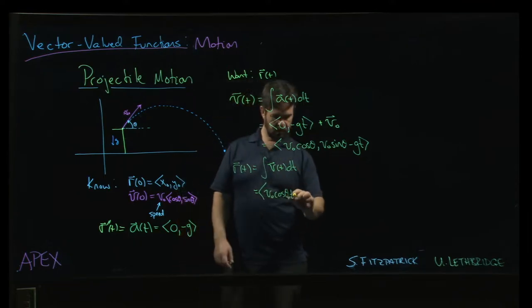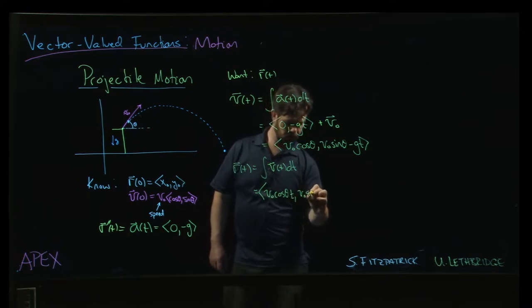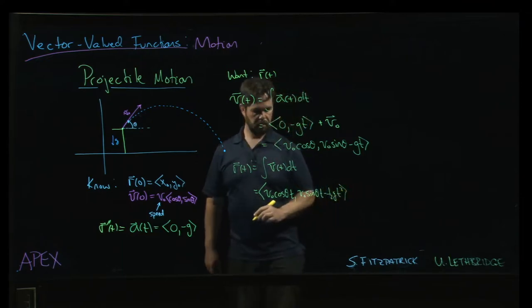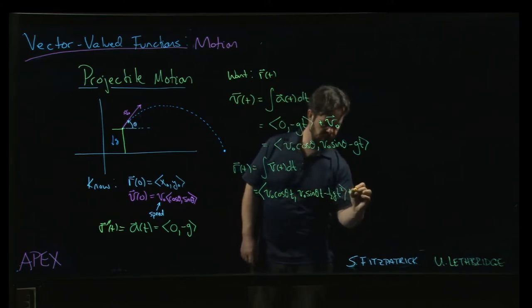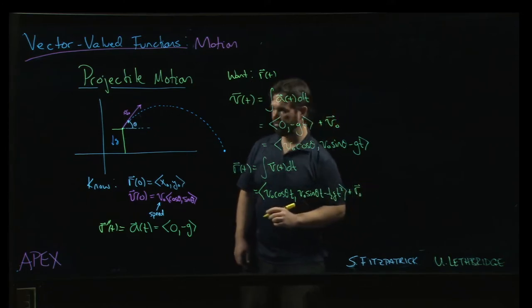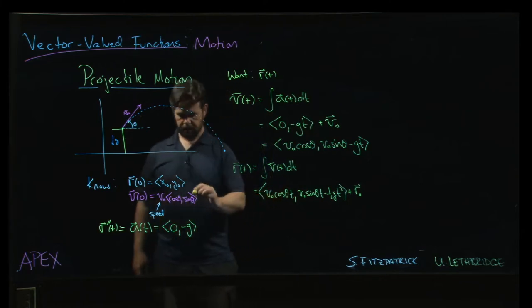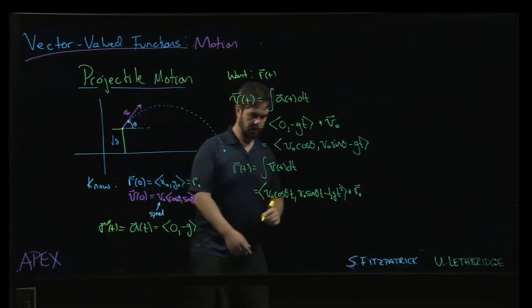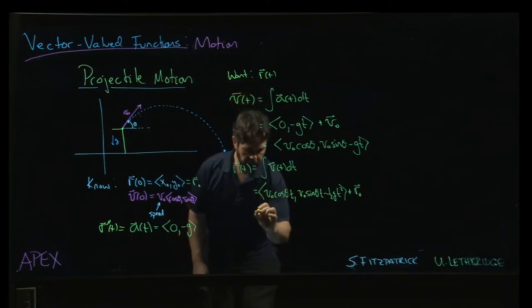And then v naught sin theta times t minus one half g times t squared, plus an initial position - which is this initial position here. That solves the problem.